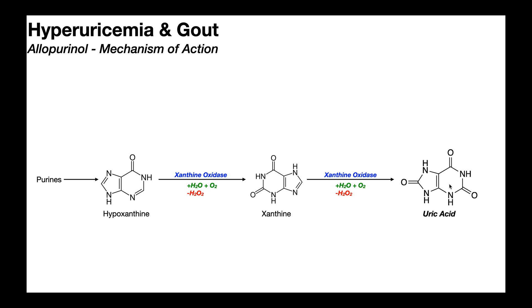Uric acid can build up in humans if its production exceeds its elimination. When that happens, you can develop crystals of gout. Those crystals lead to the activation of the enzyme NADPH phagosome oxidase, which is involved in the production of reactive oxidative species — free radicals. Those free radicals damage cells, causing inflammation, which then causes further damage, particularly around the joints where gouty crystals normally reside.